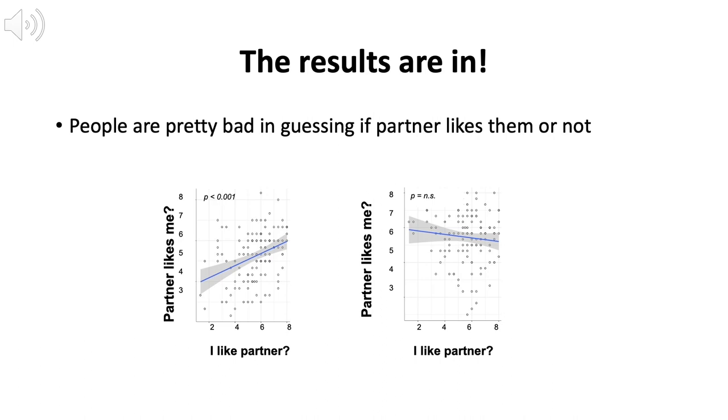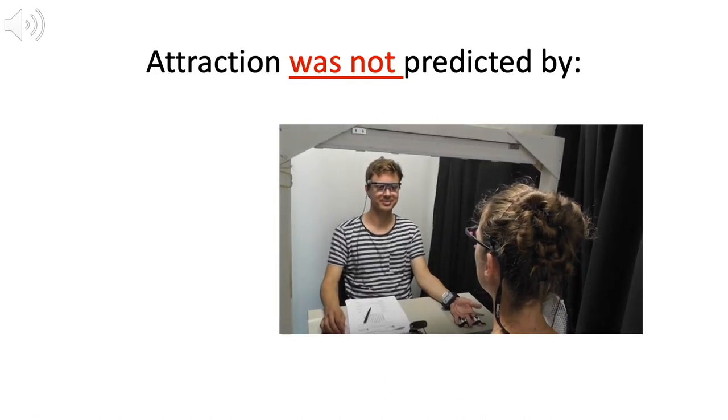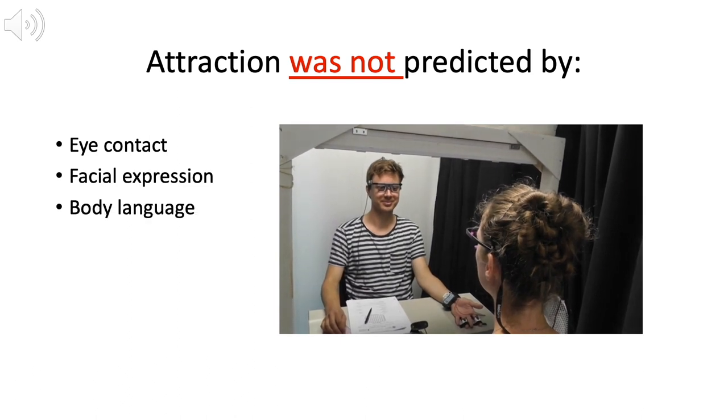So what are the reliable signals that someone likes us? As it turns out, no single signal, like frequent eye contact, smile or gesture, were good predictors of people's attraction.